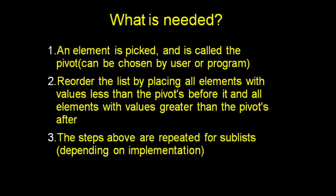Because you want some sort of pivot that would separate the list as evenly as possible, but because there's no way to do that without actually looking through the list to find what the best pivot is, just choosing a random number from the list is usually the best way to do it. Anyway, the second thing here is you reorder the list by placing all the elements with values less than the pivot before it, and all the elements greater than the pivot afterwards. The steps here are repeated for the sub-list that you make, and you continue from there.